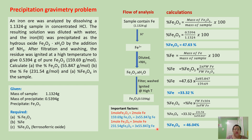Now we proceed to calculation. First, we calculate the percent ferric oxide. This can be easily calculated because the mass of precipitate and the mass of sample are both given. So percent ferric oxide is equal to 0.5394 grams of ferric oxide over 1.1324 grams of sample times 100, which gives us percent ferric oxide equal to 47.63%.